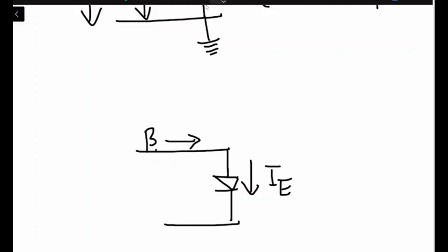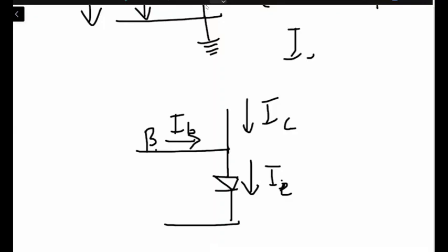Since this is the AC thing, we need to be a little bit careful. The current ie is taken as ie with a small letter. Similarly, the current flowing at the base will be taken as ib with a small letter, and from the collector side the current will be taken as ic with small letters. The emitter current is actually equal to the collector current plus the base current.